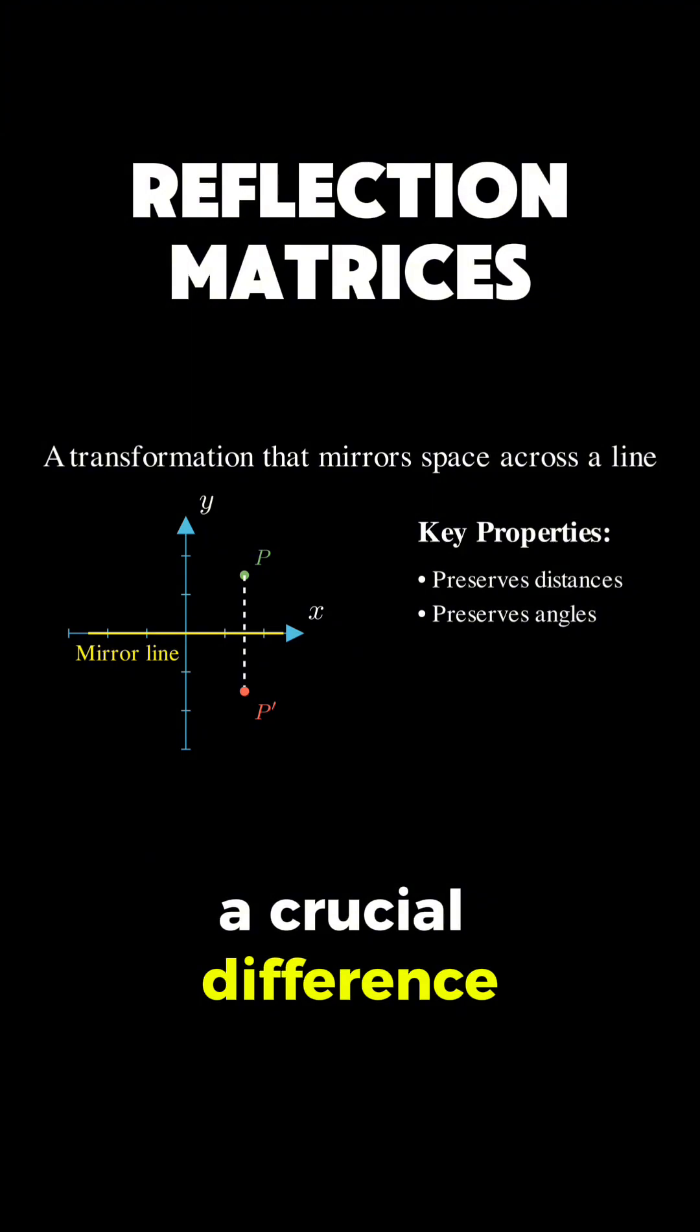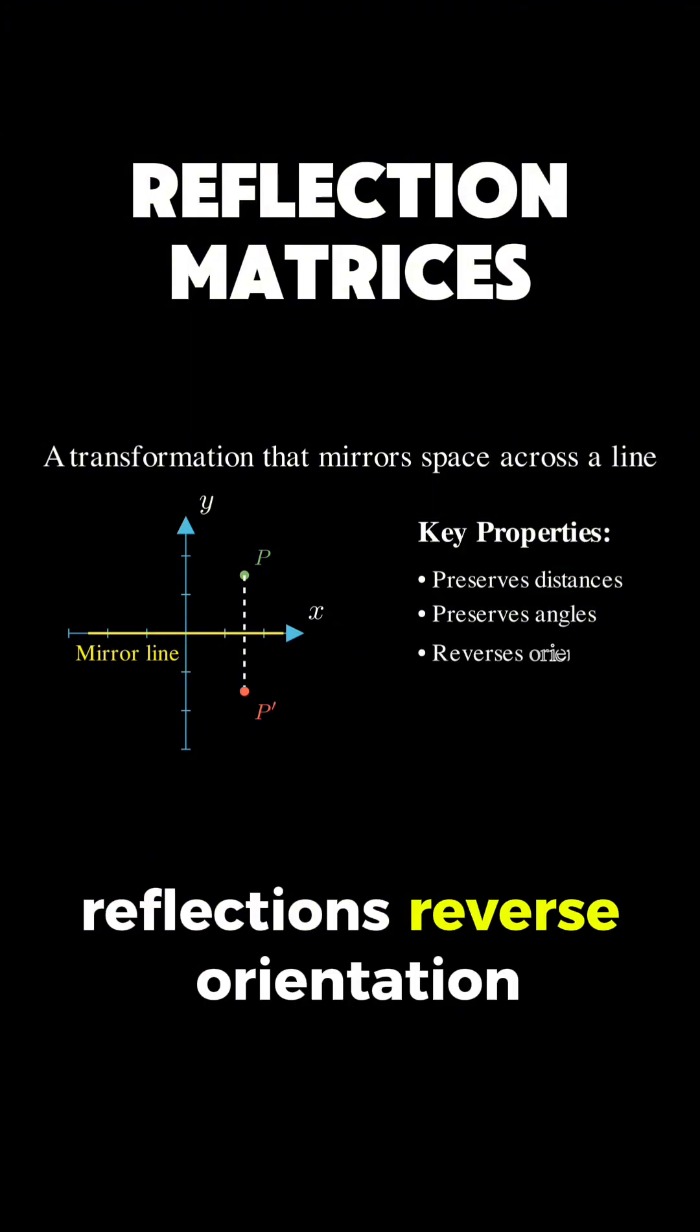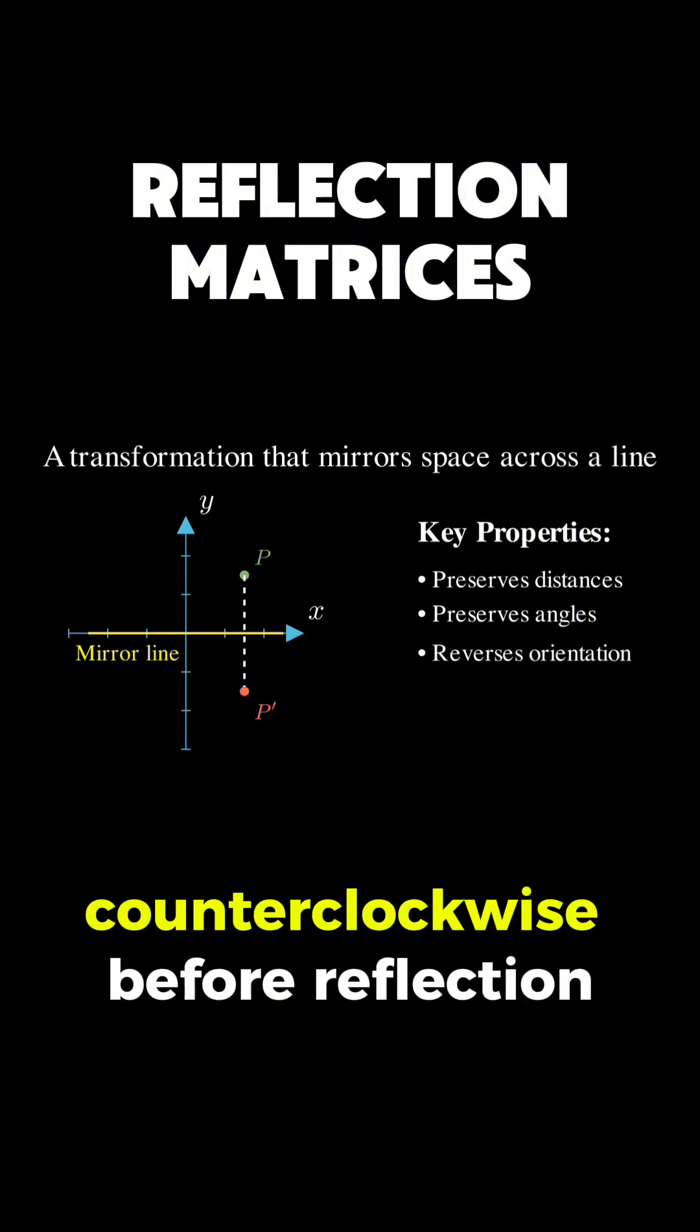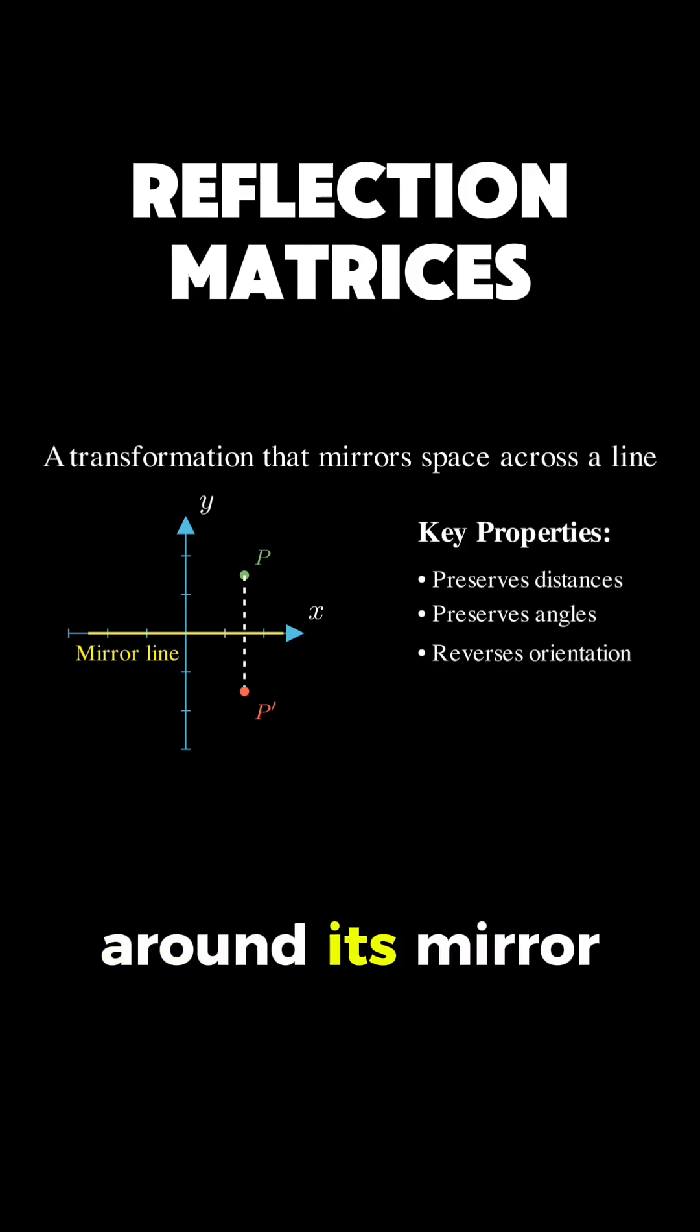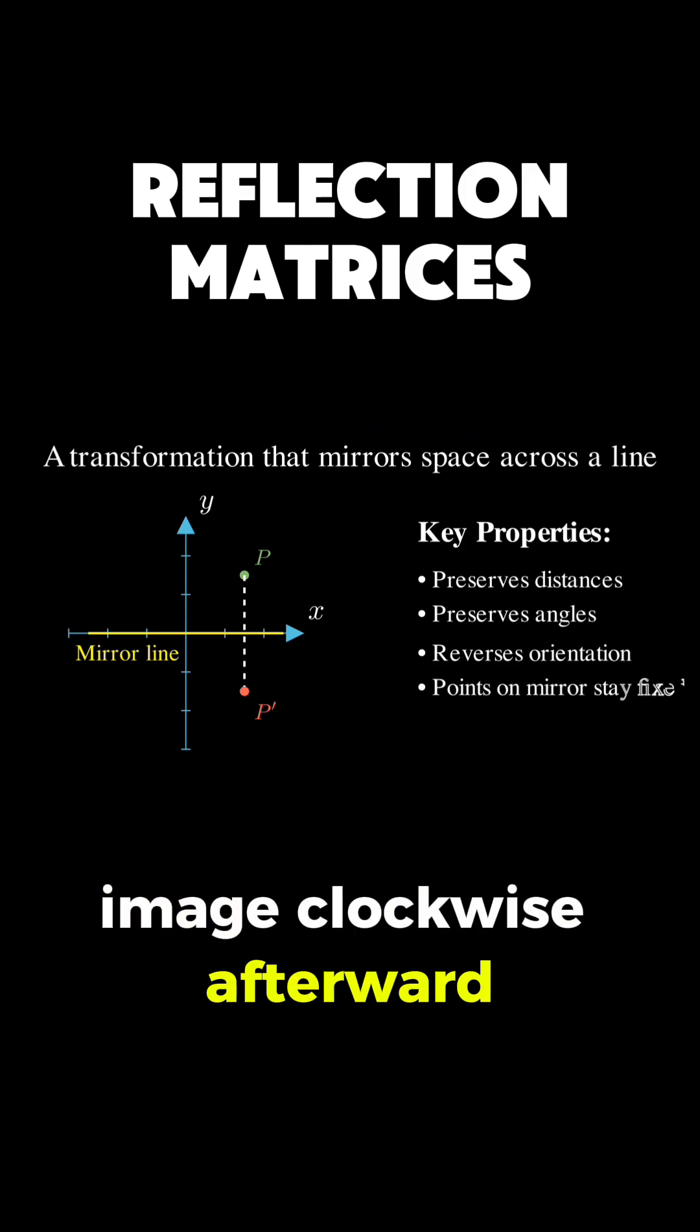But there is a crucial difference. Reflections reverse orientation, meaning that if you trace around the shape counterclockwise before reflection, you'll trace around its mirror image clockwise afterward.